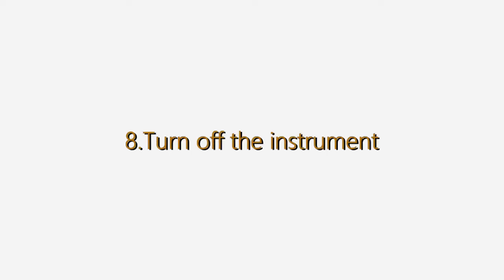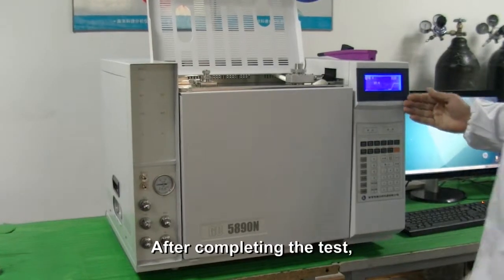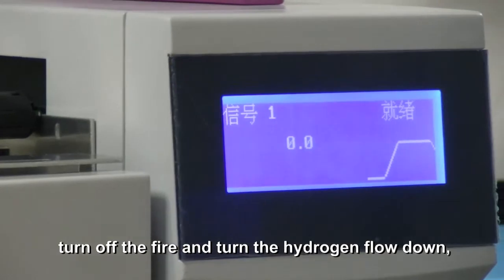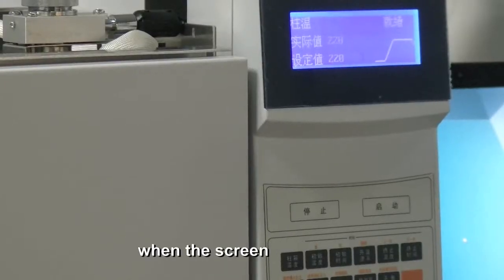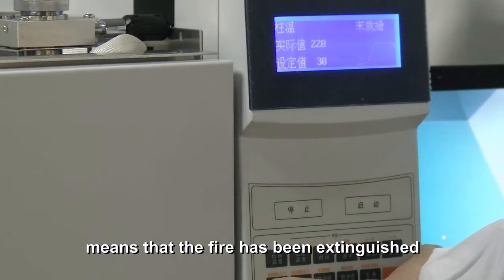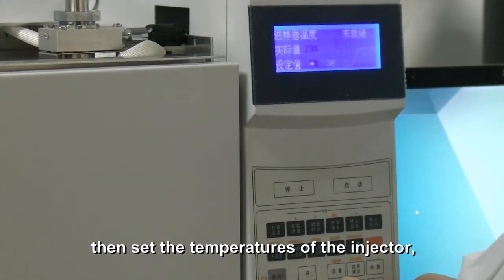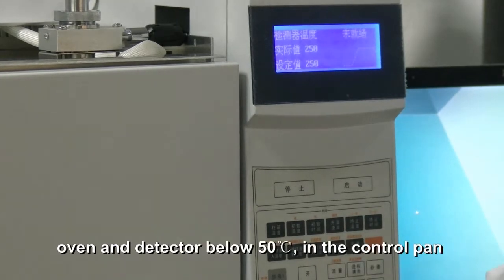Turn off the instrument. After completing the test, turn off the fire and turn the hydrogen flow down. When the screen shows zero, the fire has been extinguished. Then set the temperature of the injector, oven, and detector below 50°C in the control panel.